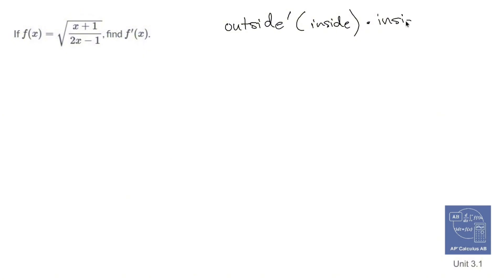I'm gonna rewrite this out. So f(x) is going to equal, in parentheses to the one-half instead of one big square root, x plus 1 over 2x minus 1.